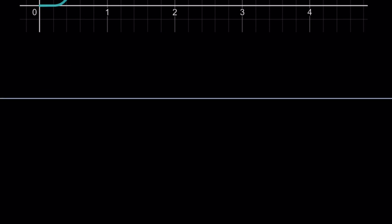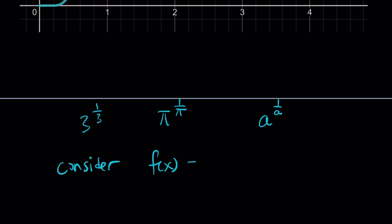We're going to be looking at two numbers: 3 to the power 1 third and pi to the power 1 over pi. This is much better because the base and exponent are related — whatever the base is, say a, the exponent is 1 over a. So let's consider the function f(x) = x to the power 1 over x. Then 3 to the power 1 over 3 is f(3), and pi to the power 1 over pi is f(π). So we're comparing two outputs of this function.